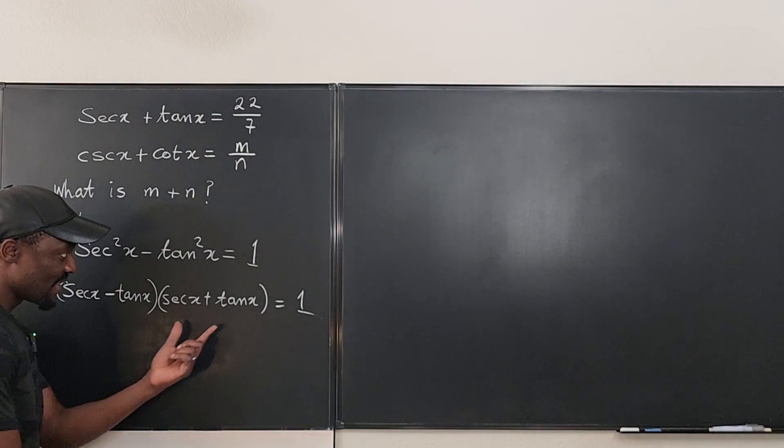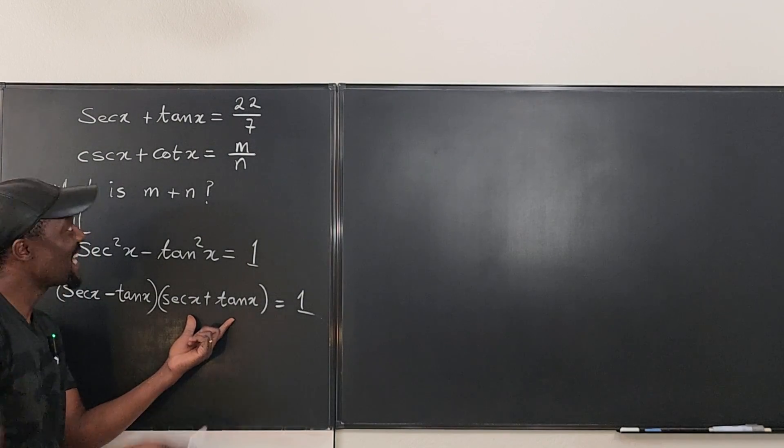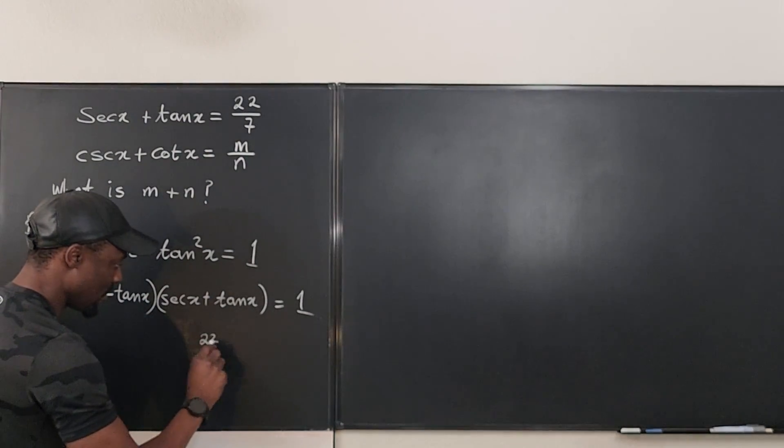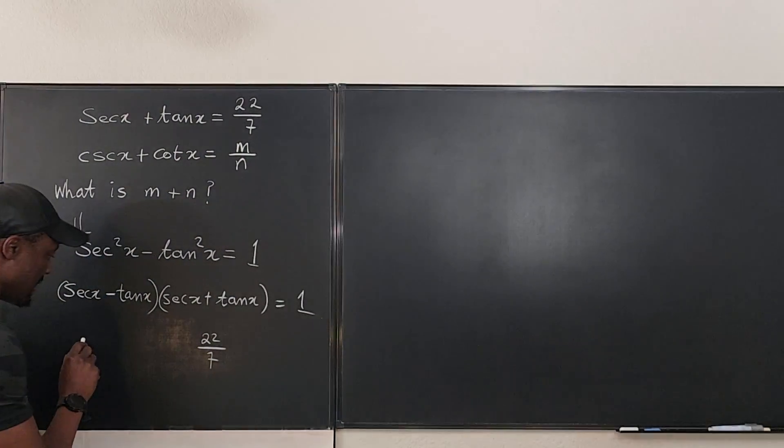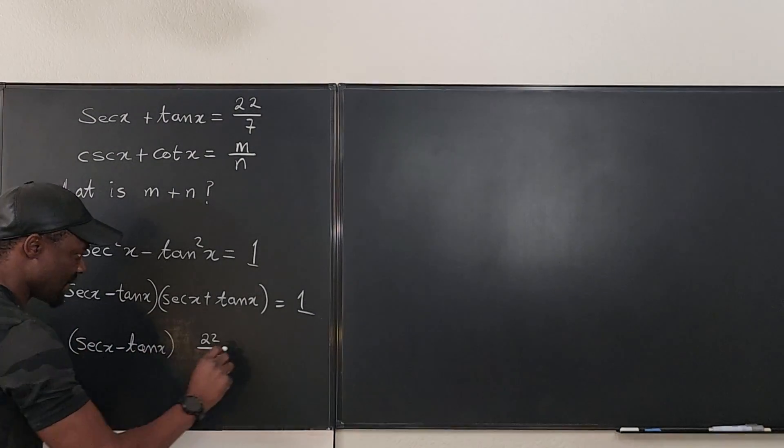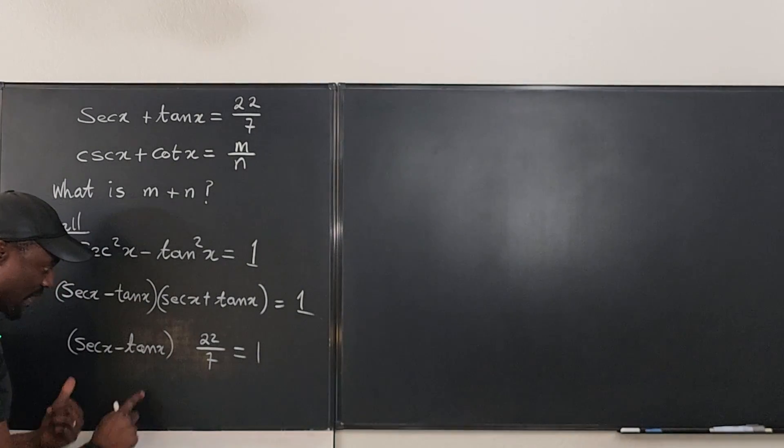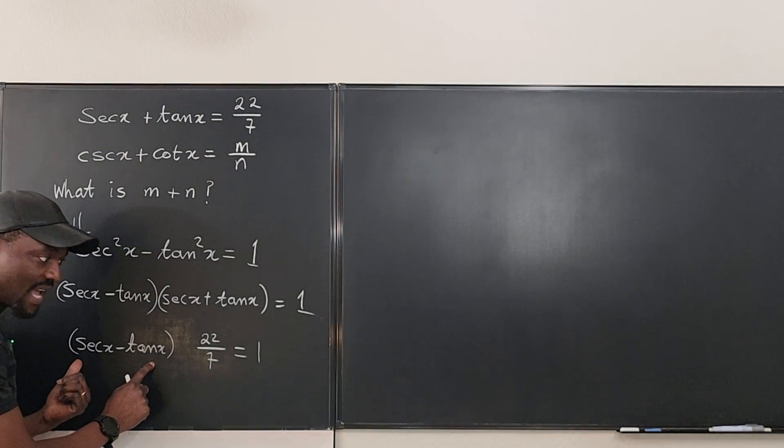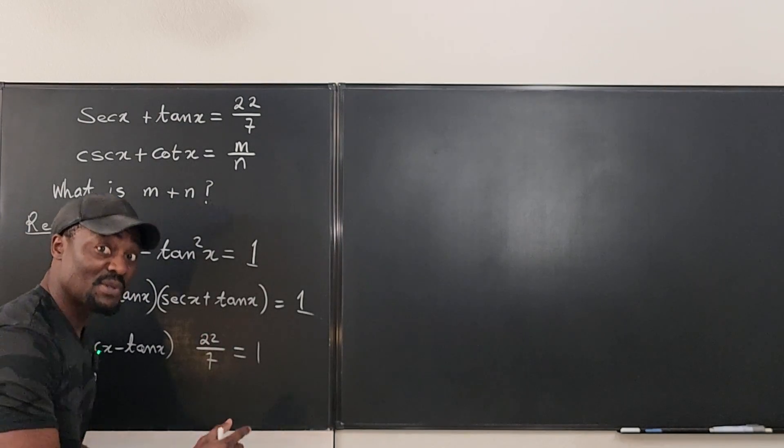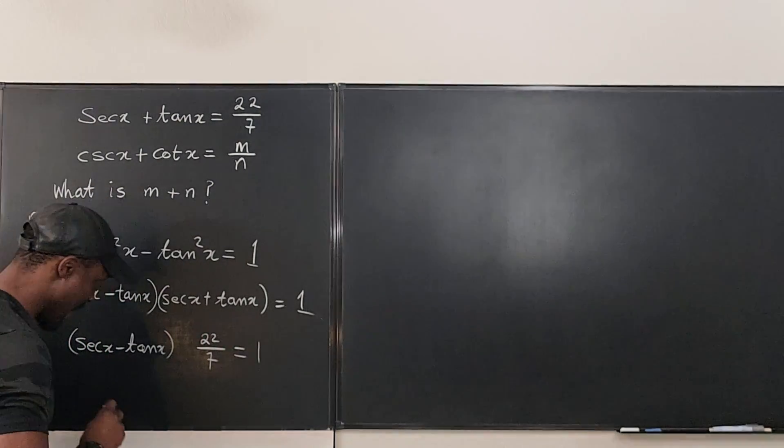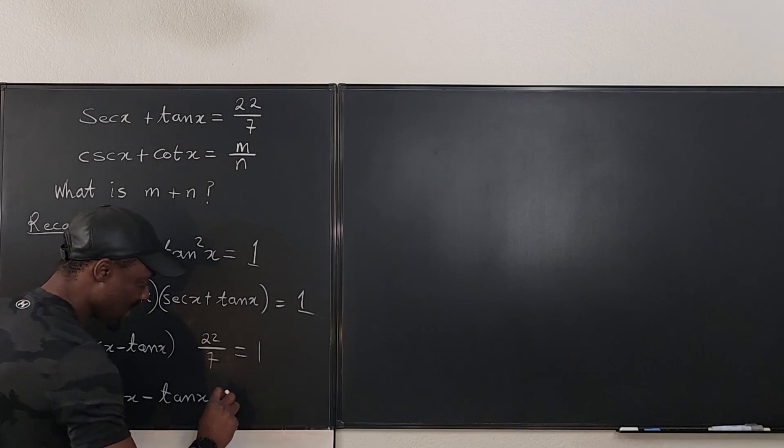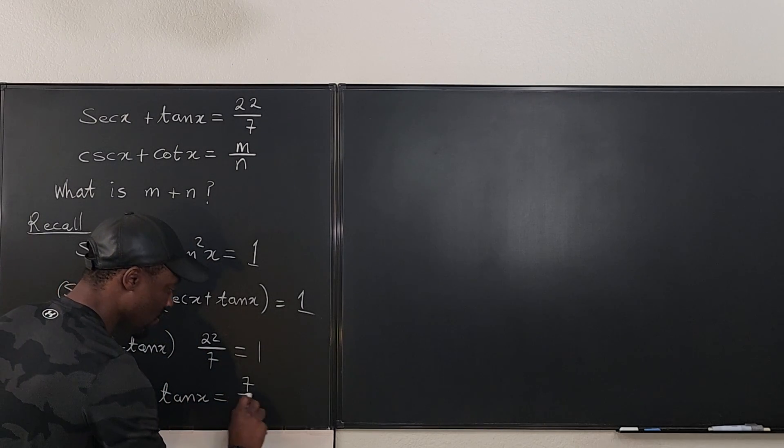Because now, they've given me what secant x plus tan x is. It's 22 over 7. So I can say that this is 22 over 7 multiplied by secant x minus tan x. Do you see that? So if I want to get secant x minus tan x, I'm going to divide both sides by 22 over 7. It gives me 7 over 22. So I can clearly say that secant x minus tan x will be equal to 7 over 22.